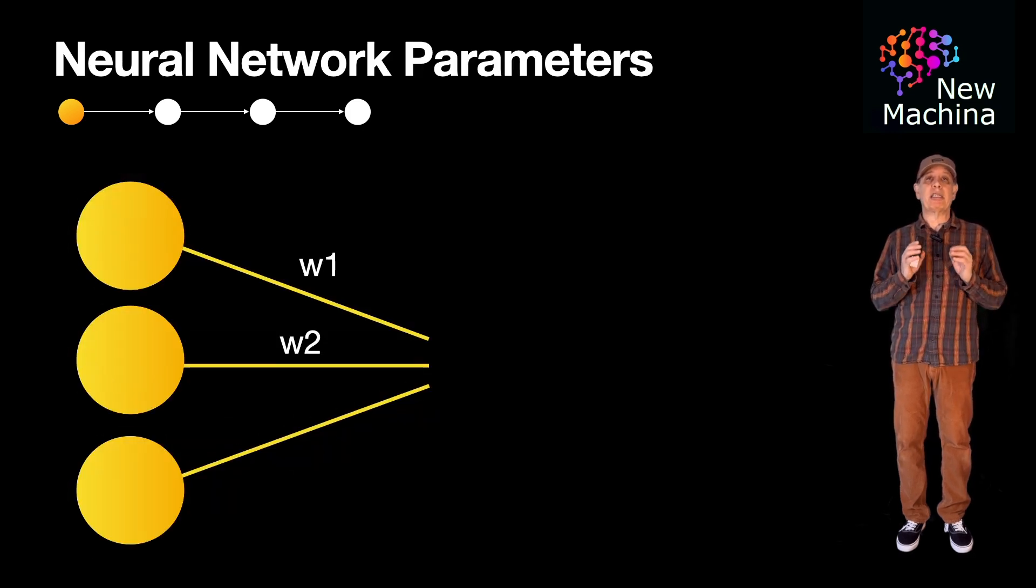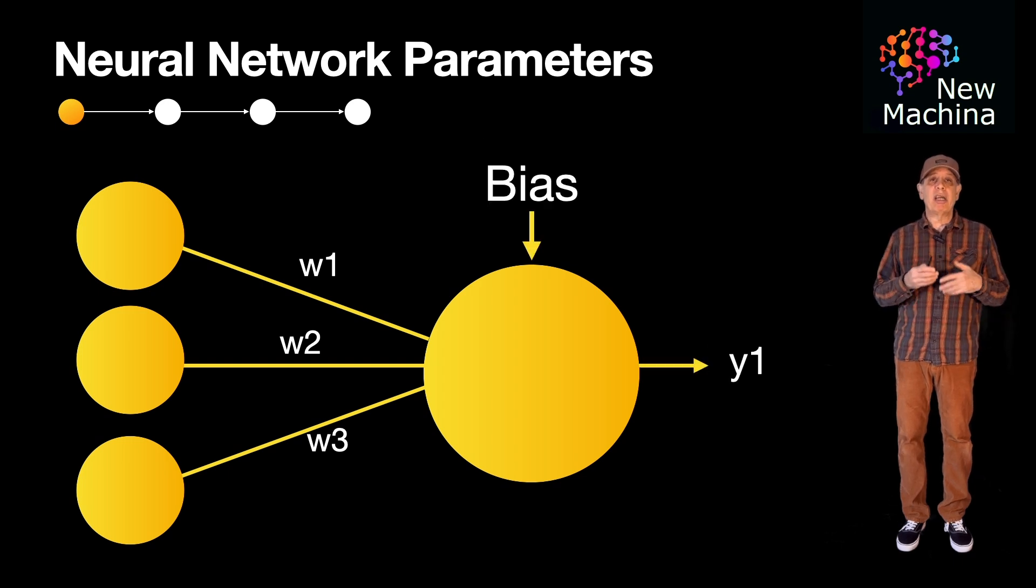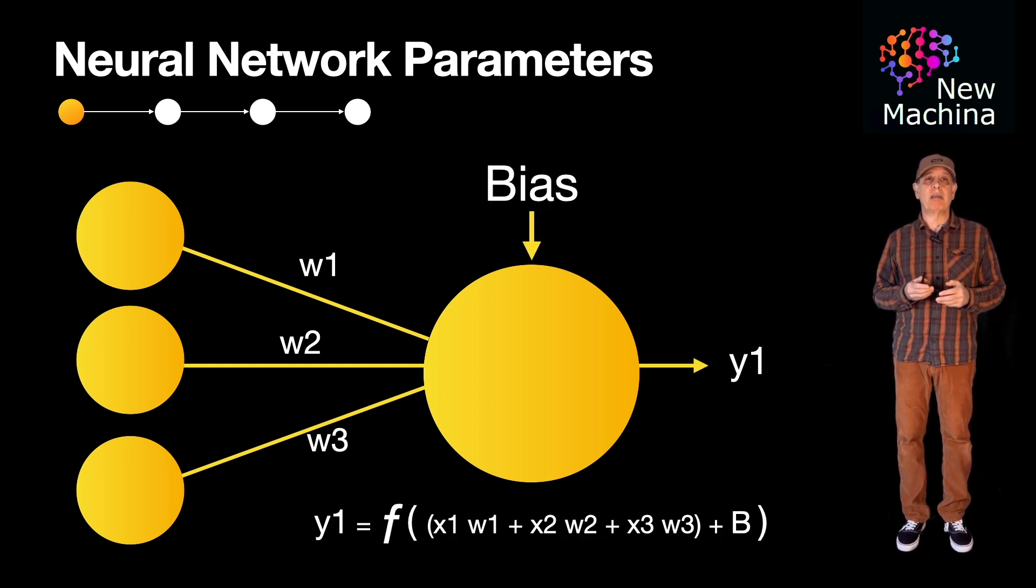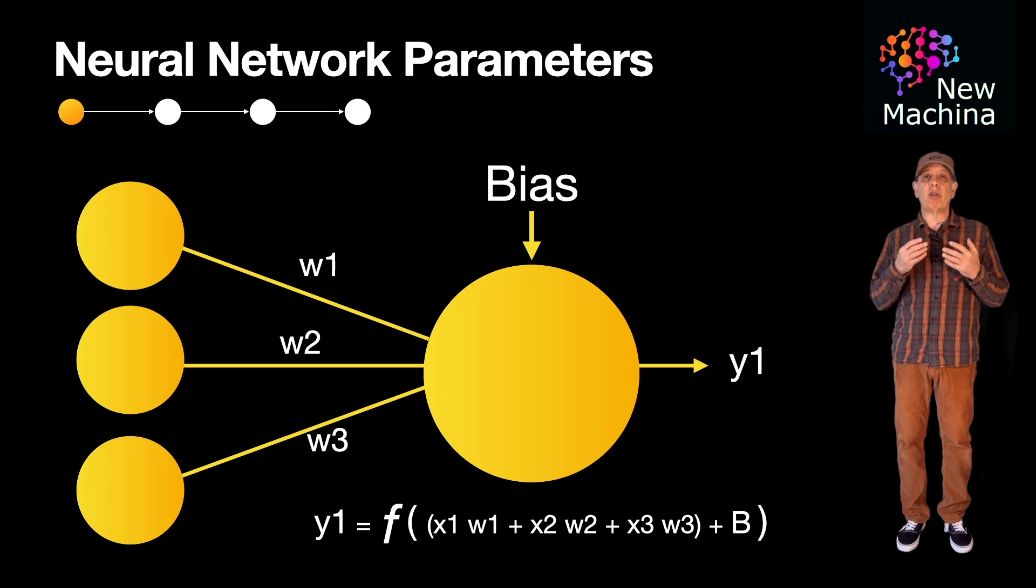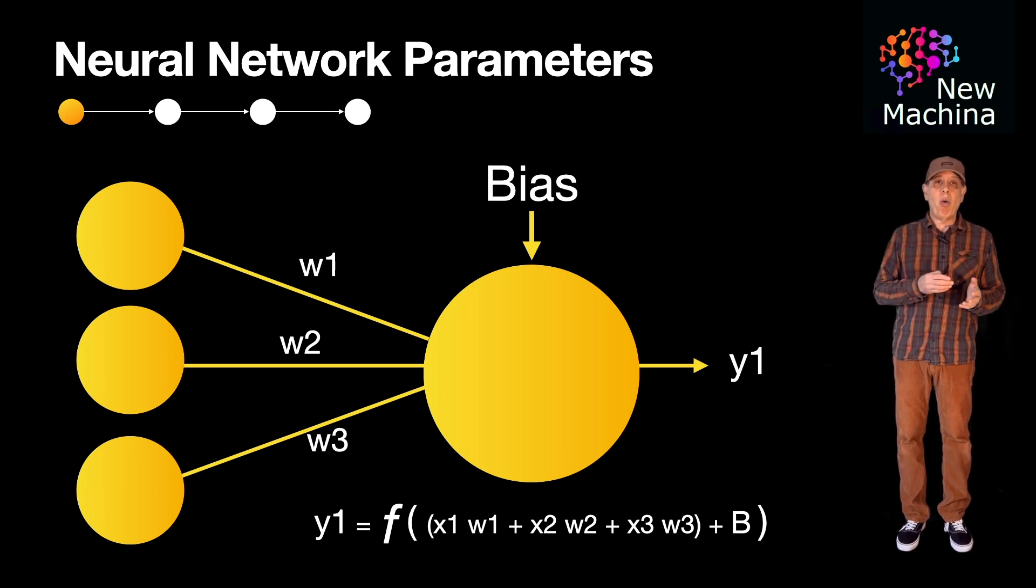If you look closer at a specific neuron, each of the connections between neurons is a weight. Each weight is independent of the others. These weights determine the importance of the respective input. A small weight suppresses the importance of the input while a large weight magnifies the importance.